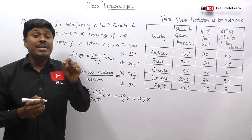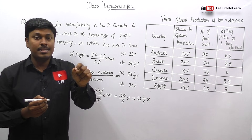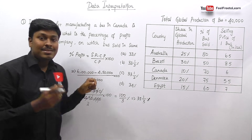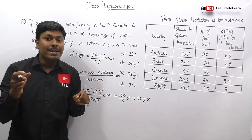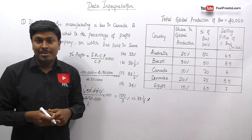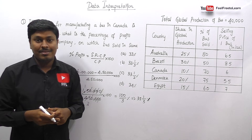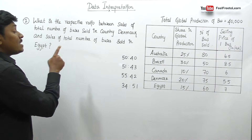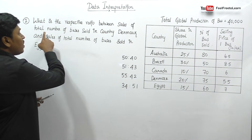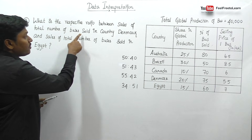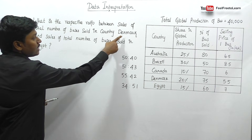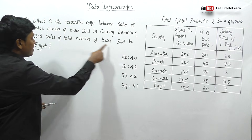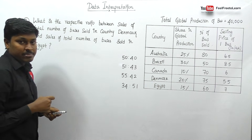So the profit percentage earned is 33 and 1/3 percent, or 100/3 percent. If it is a profit percentage, then selling price minus cost price divided by cost price into 100. Question number 2: What is the respective ratio between the sales of the total number of buses sold in Denmark and the sales of total number of buses sold in Egypt?